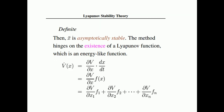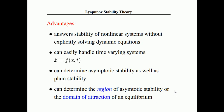If x-bar is asymptotically stable, the method hinges on the existence of a Lyapunov function — an energy-like function. V-dot(x) is computed as: (∂V/∂x)·(dx/dt). Expanding further: (∂V/∂x₁)·f₁ plus (∂V/∂x₂)·f₂, and so on. Here dx/dt comes from the system's differential equation, since dx/dt equals f(x). This expansion takes the Jacobian form, which we will discuss in another video.